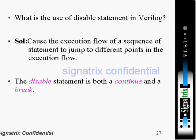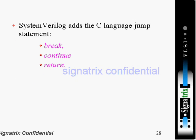The 'disable' statement causes the execution flow to jump to different points. In Verilog, 'disable' acts as both a continue and a break. In SystemVerilog, the C language jump statements — break, continue, return — are added. 'Disable' is available in Verilog. If you want to do more than that, SystemVerilog provides the extra features: break, continue, and return.